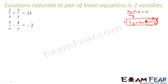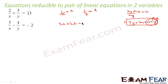But in certain cases, we can reduce these equations to a linear equation. In such cases, let us suppose 1/x = a and 1/y = b. So this equation becomes 2a + 3b = 13, and this equation becomes 5a - 4b = -2.